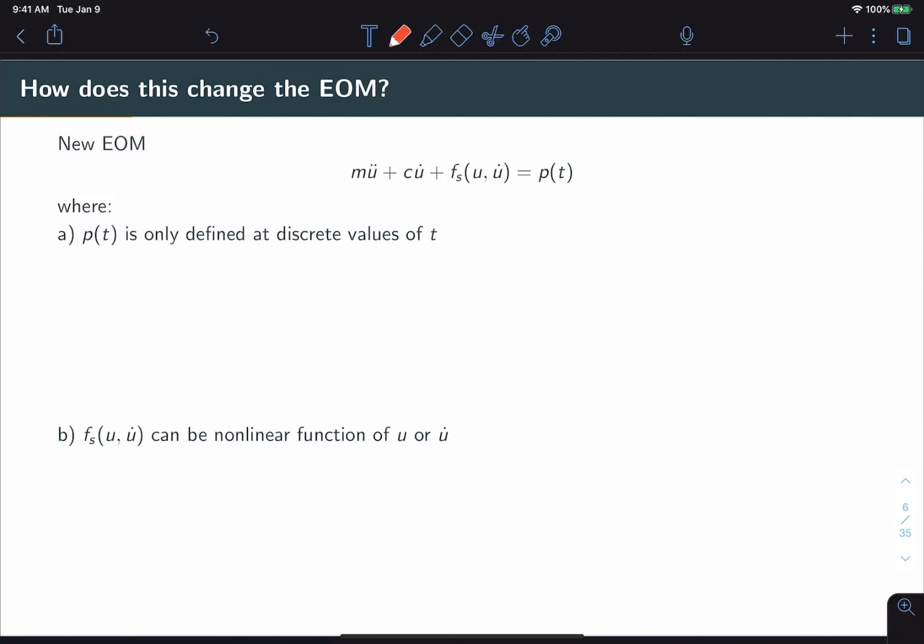Now let's talk about these limitations in the context of a new equation of motion. Here I've written this equation of motion, which still has the typical terms mu double dot and cu dot. But instead of the ku term, I've placed this arbitrary function of u and u dot, and I'm calling this function f_s because it's going to represent our spring forces. We still have some function p(t), which represents our external loading.